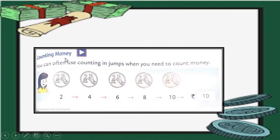Counting money. You can often use counting in jumps when you need to count money. For example, if you have coins of 2 rupee, 1, 2, 3, 4 and 5 coins. Then what is the total of that coins? Let us see. 2 plus 2, 4. 4 plus 2, 6. 6 plus 2, 8. 8 plus 2, 10. So, the total amount or value is 10 rupees.